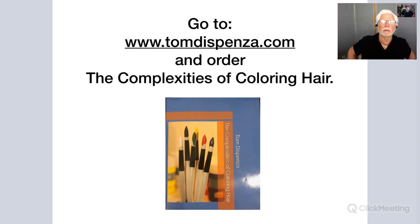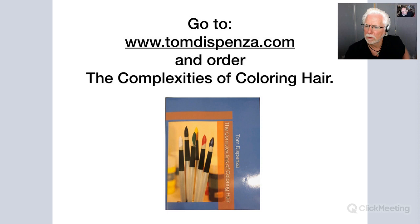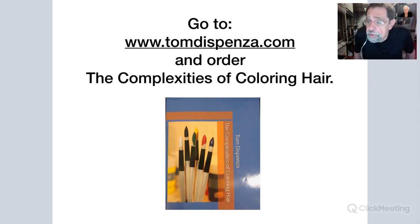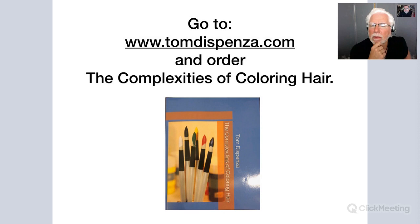Tom has a class on just eye color — you can find it on YouTube by searching 'Tom Dispensa eye color.' People with blue eyes are the easiest to color; people with green eyes are the most difficult; the darker the brown of the eye, the larger the granule of color, and consequently the harder to lighten the hair.